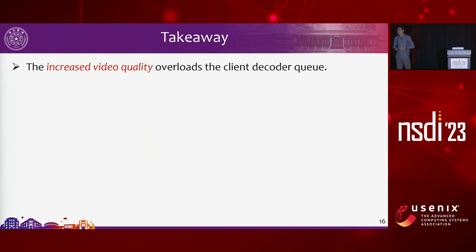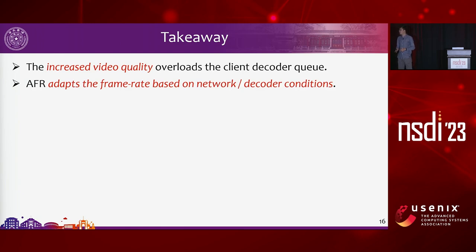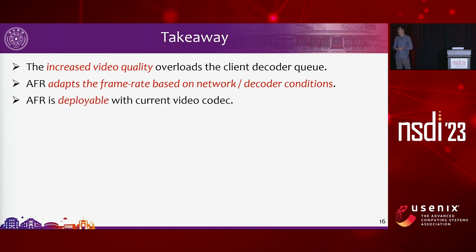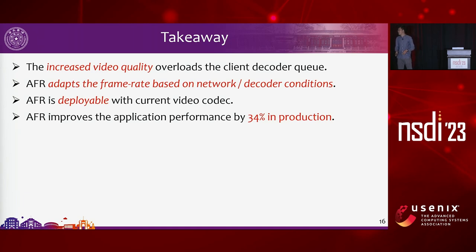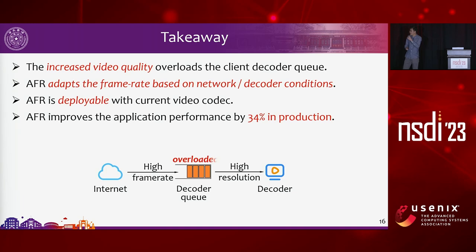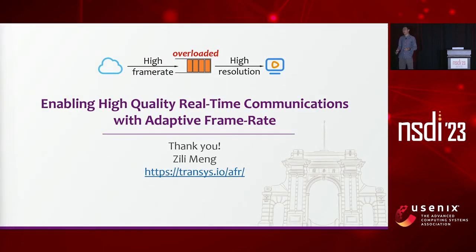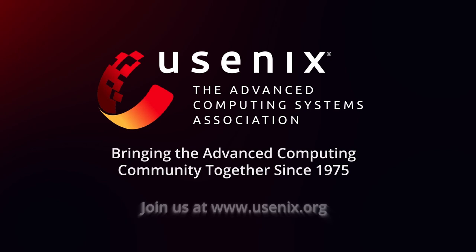The key takeaway is that increased video quality overloads the decoder queue, and AFR adapts the frame rate — rather than bitrate or resolution as prior work did — based on network and decoder conditions to keep decoder queue length low. AFR is deployable in current video codecs and has been deployed in production for two years. In large-scale A/B tests, we see more than one-third improvement in stall ratio. The simulator has been open-sourced. Thank you.